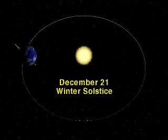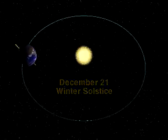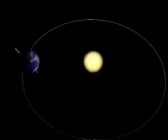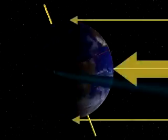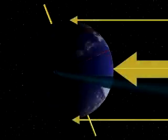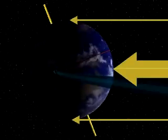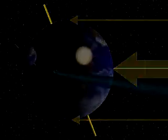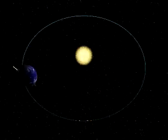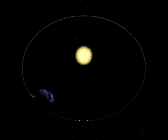At this time, the South Pole is tilted toward the Sun. Sunlight strikes the Southern Hemisphere more directly, making this their summer season. This corresponds to the shortest day in the Northern Hemisphere's winter.